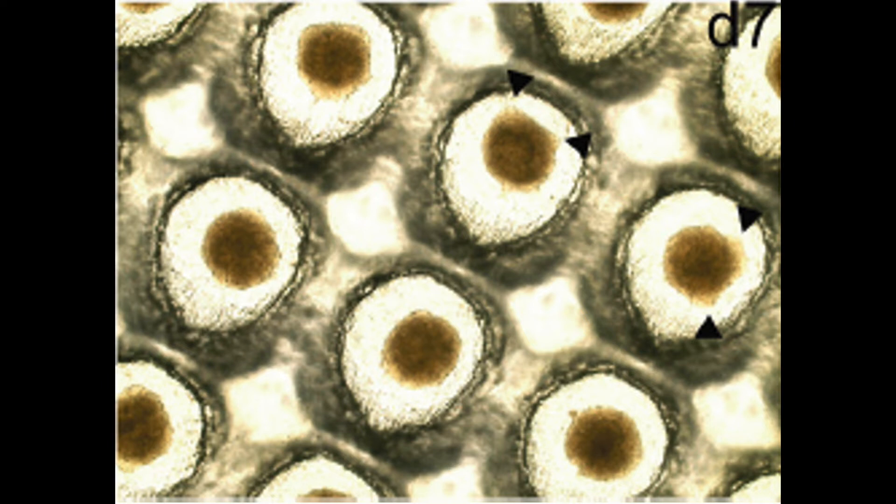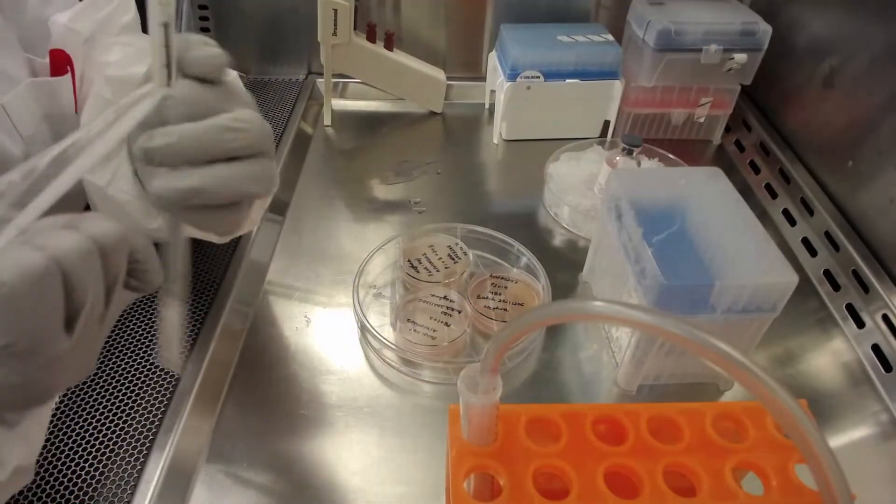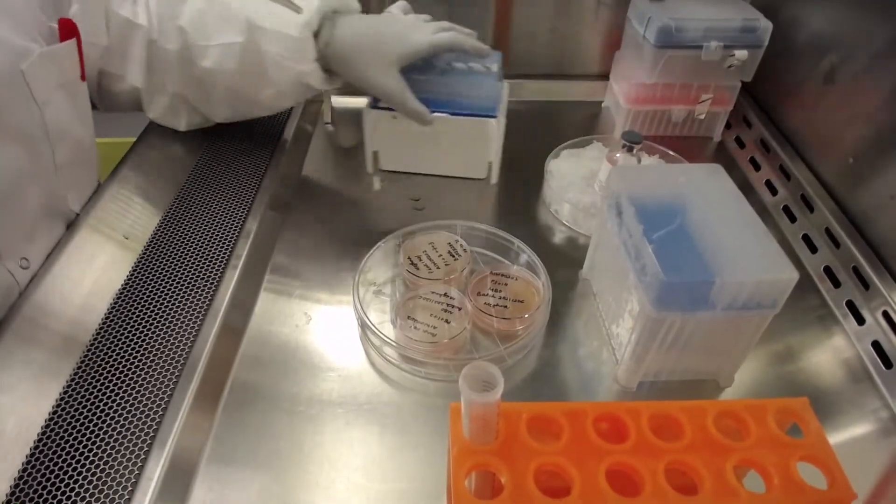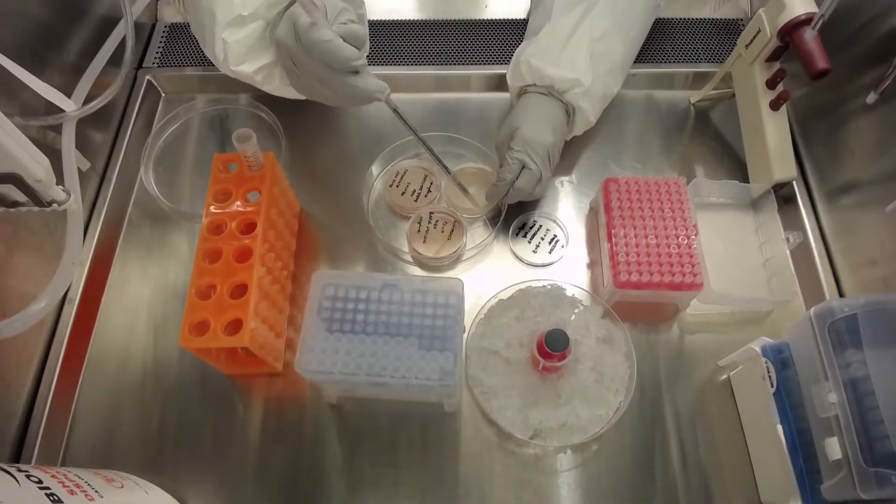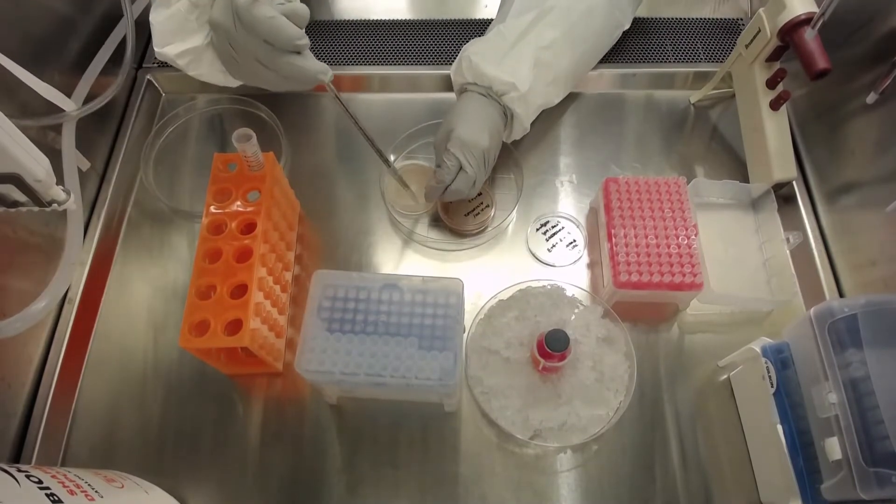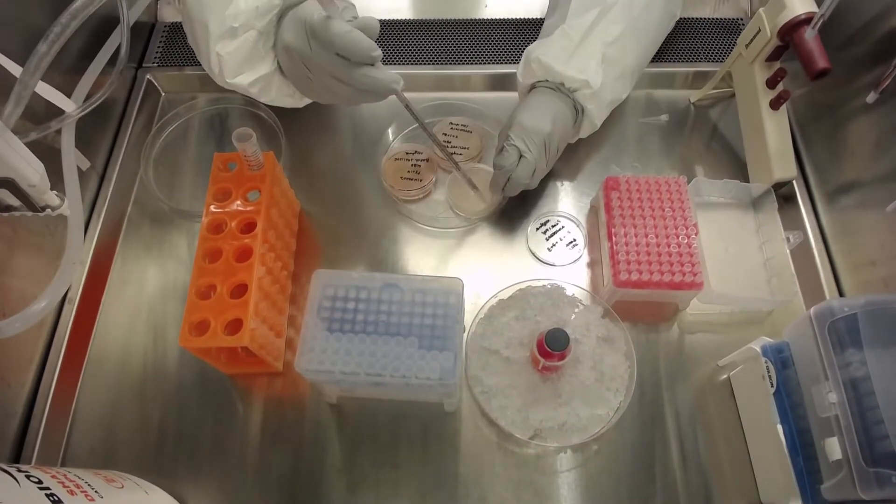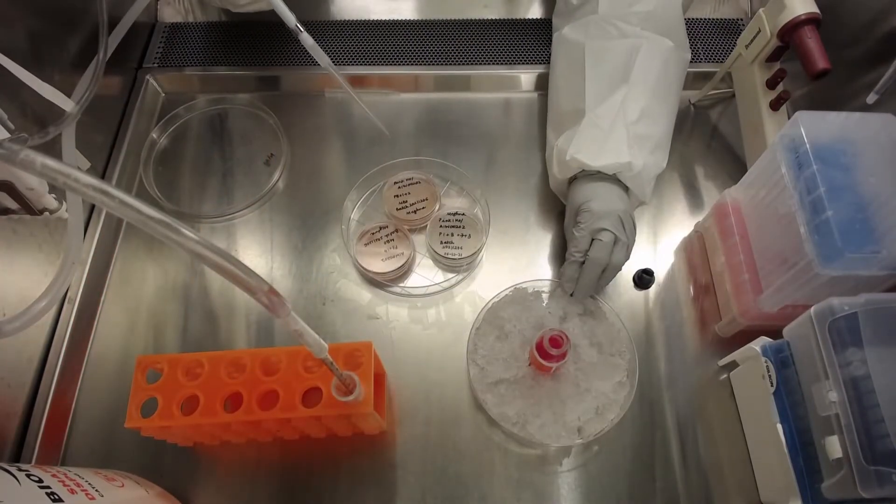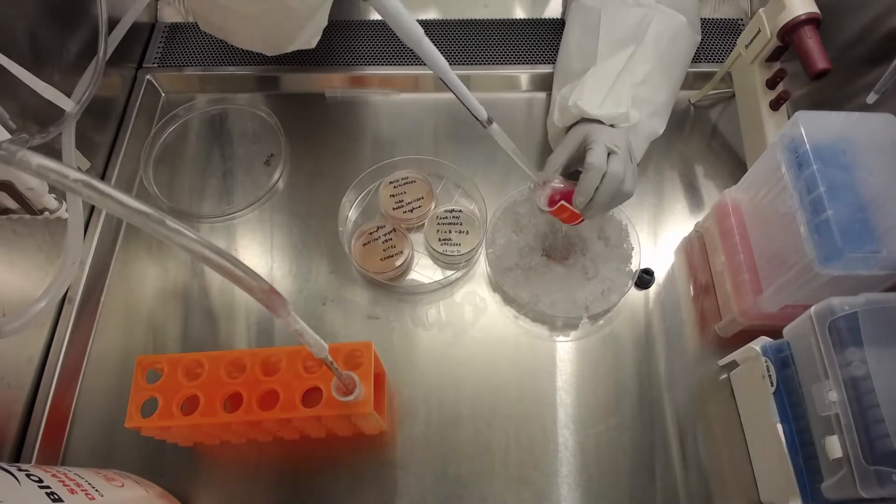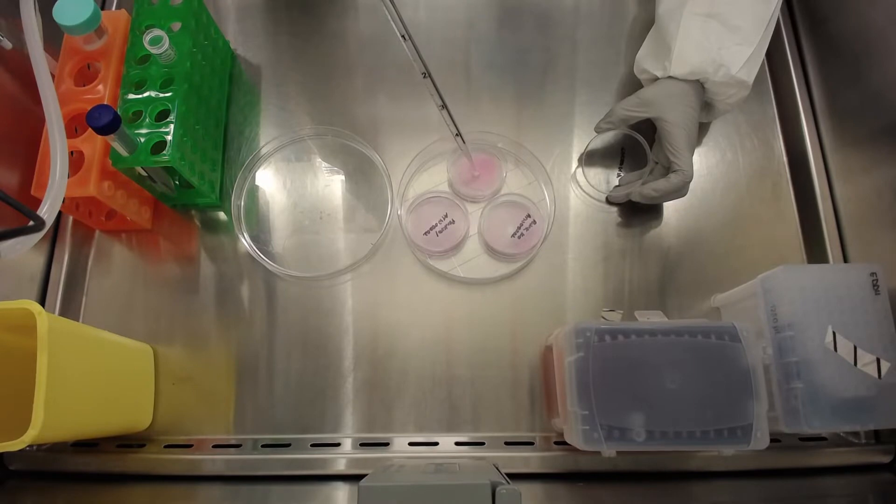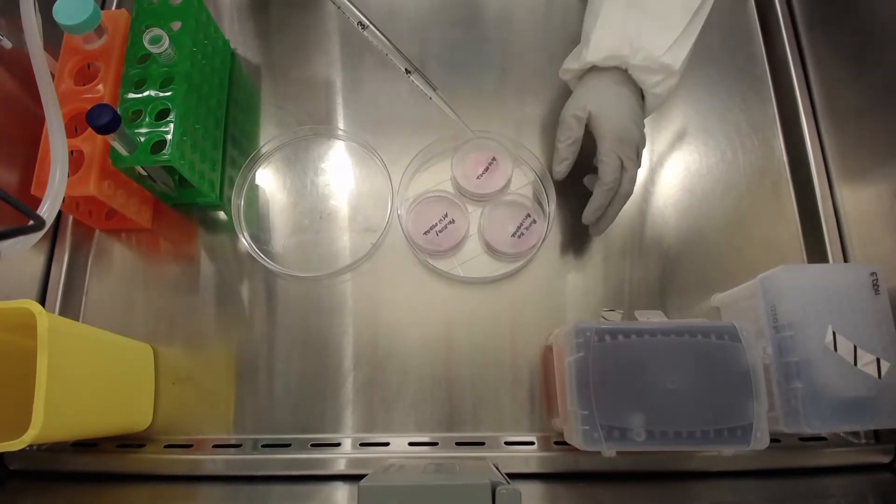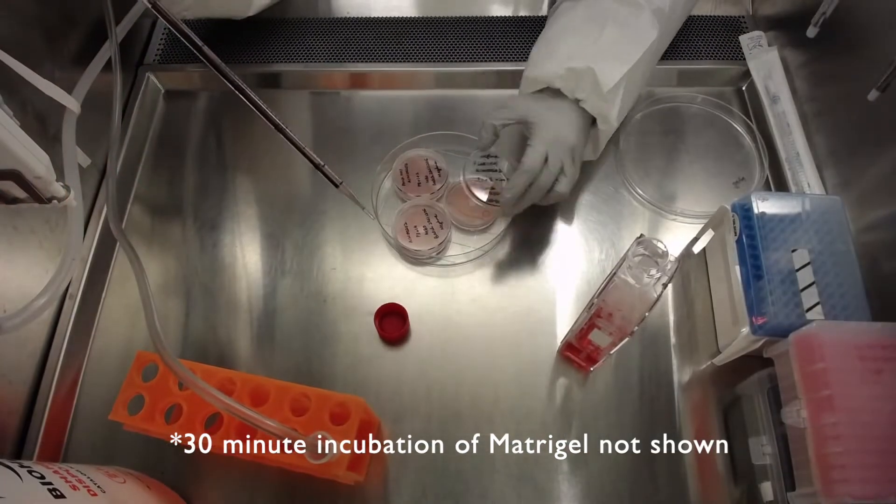Note that to embed EBs in Matrigel growth factor reduced, we use cold serological pipettes or pipette tips. Start the procedure by aspirating the media. Then, take 1.5 milliliters of non-diluted Matrigel growth factor reduced, and slowly add it to the center of the disc, to the platform. This way, Matrigel will evenly spread across all wells. Place the dish back into the incubator for 30 minutes.